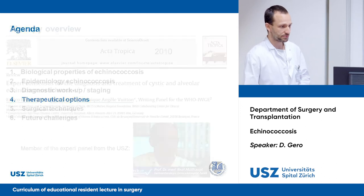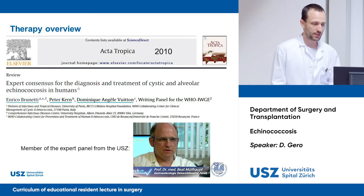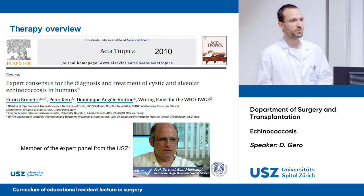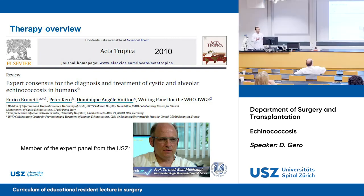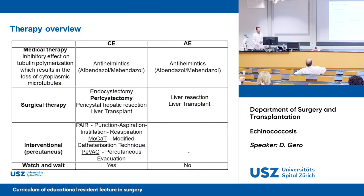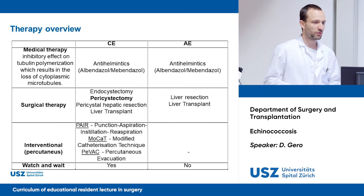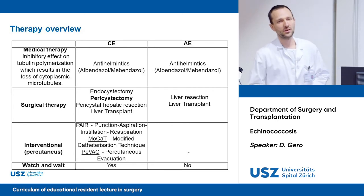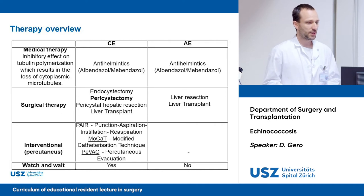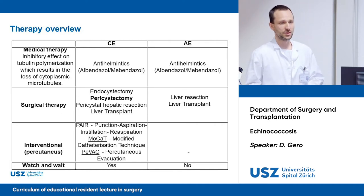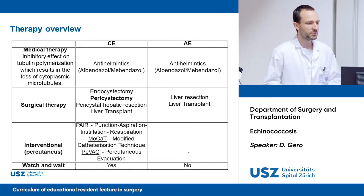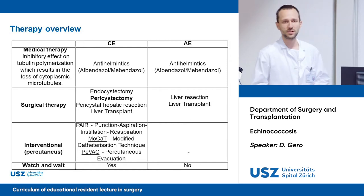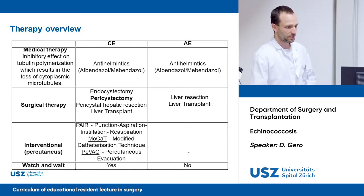Now I'd like to talk about therapy. The prevailing WHO recommendation was published 10 years ago from an expert consensus meeting where our institution was represented by Professor Müllhaupt. For both cystic and alveolar echinococcosis, when lesions are small it is justified to begin with medical therapy — anthelmintics, albendazole or mebendazole — which have an inhibitory effect on tubulin polymerization, resulting in loss of cytoplasmic microtubules.